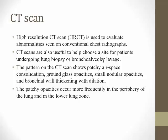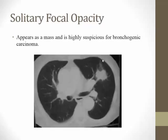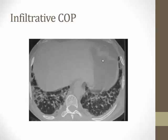High-resolution CT scan is useful in COP to identify the appearance and distribution of disease. The typical presentation is bilateral patchy peripheral opacities, which can range from a few centimeters to an entire lobe. Another CT finding is a focal opacity, which can be deceiving and mistaken for bronchogenic carcinoma — those masses are sometimes resected and only on pathology revealed to be COP. An atypical presentation is diffuse bilateral infiltrates.